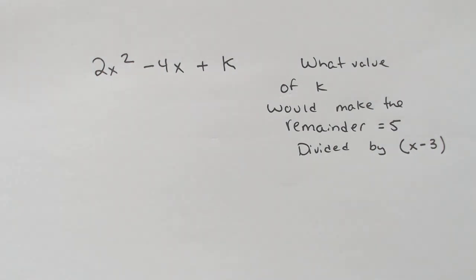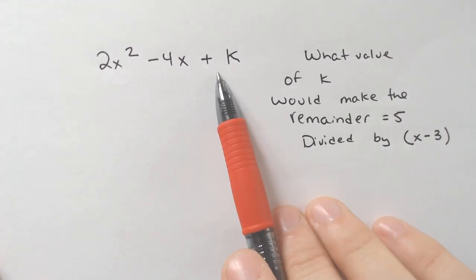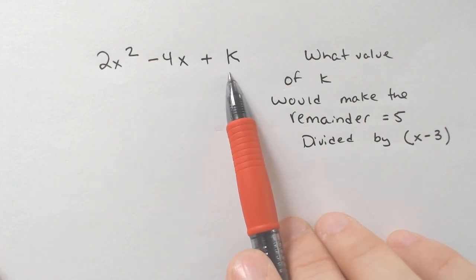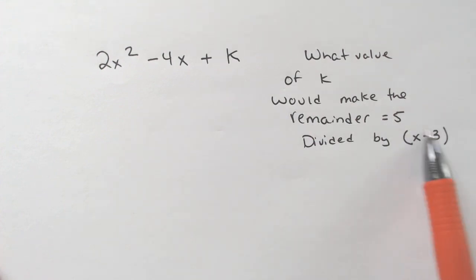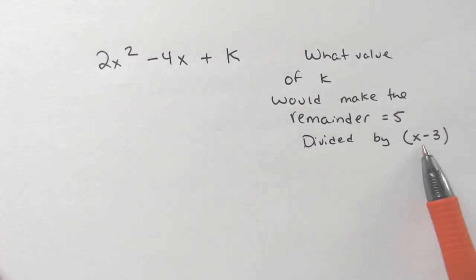Hello, and welcome back to another episode of Math with Sohn. Today we're going to be doing a problem like this, which is when you have a problem and they have this K or A or some other letter here, and they want you to divide, but they tell you the remainder is 5, and you're like, what the heck is K going to be if we want the remainder to be 5?